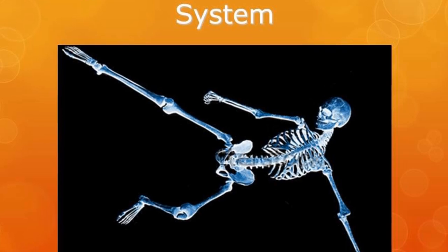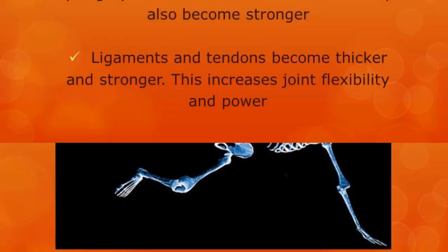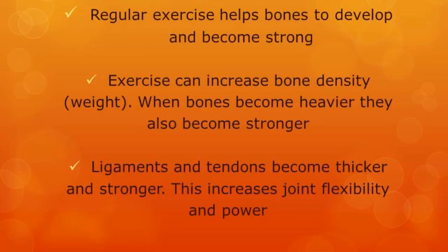Moving on to exercise and the skeletal system. There are many different things that can happen to the skeletal system after regular exercise. It can help your bones develop and become big and strong. Exercise can also increase your bone density — the weight of the bone — making them heavier and stronger. Finally, your ligaments and tendons will become thicker and stronger, which will increase your joint flexibility.